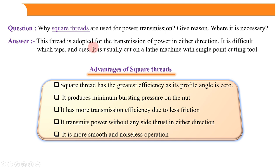Let's see what are the various advantages and disadvantages of square threads. This thread is adapted for power transmission because it can transmit power in either direction — either forward or reverse direction. It is difficult to cut with taps and dies, and it is usually cut on the lathe machine with a single point cutting tool.